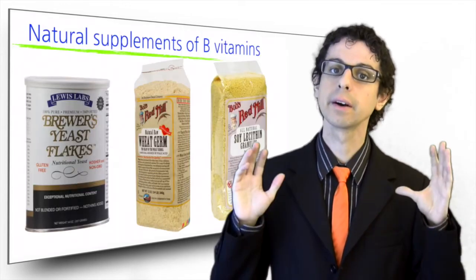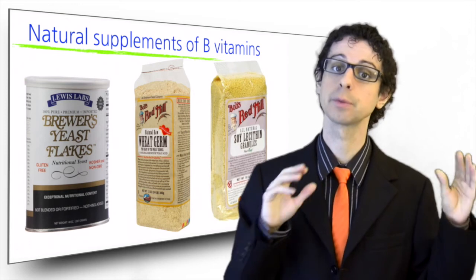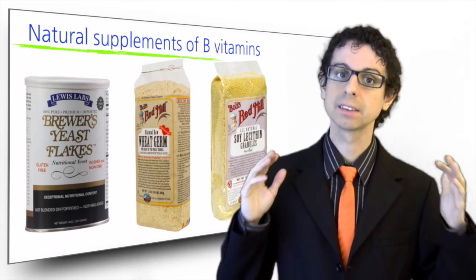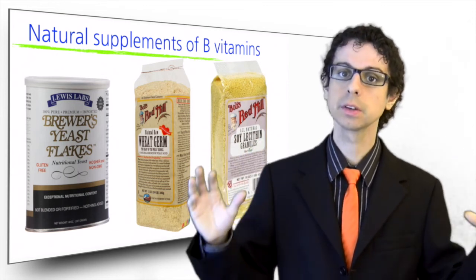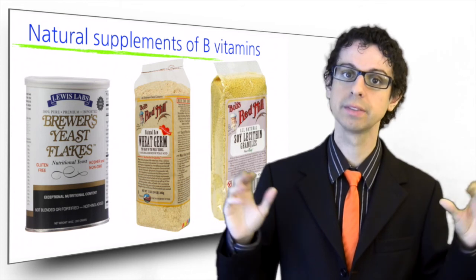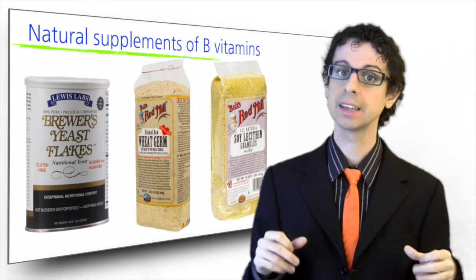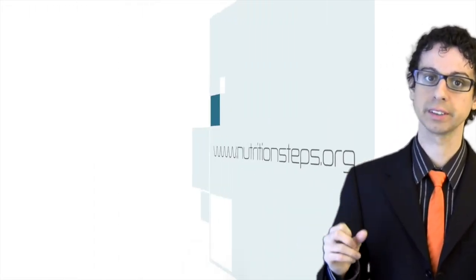Finally, there are three natural supplements of the group B vitamins, except for B12. These are dried brewer's yeast, wheat germ, and soy lecithin. I encourage you to make regular use of these natural sources of B vitamins, which also provide other precious vitamins and minerals, such as vitamin E in wheat germ, and chromium in brewer's yeast.